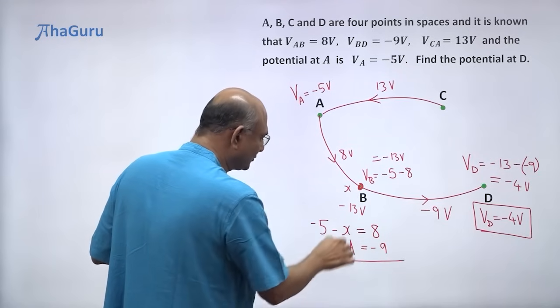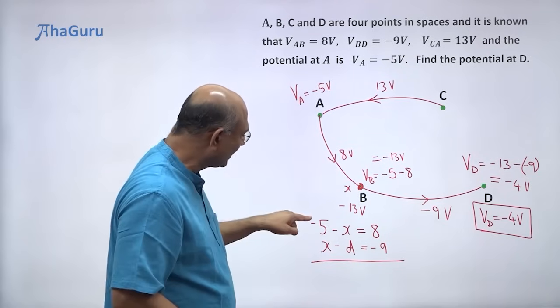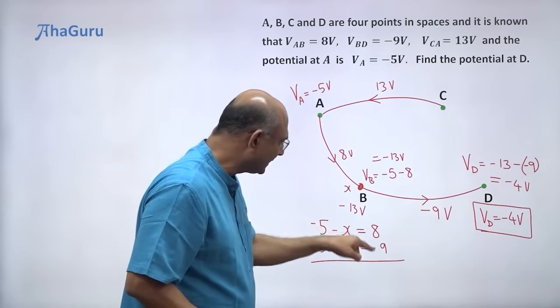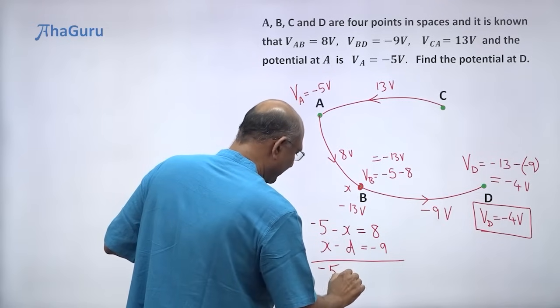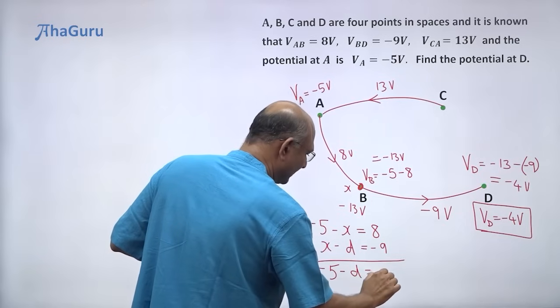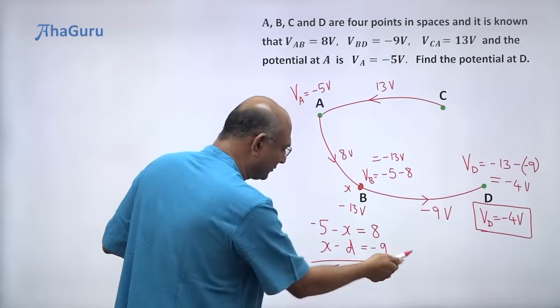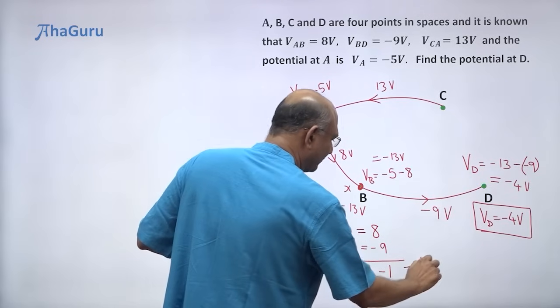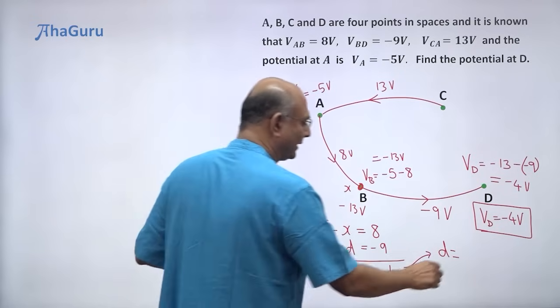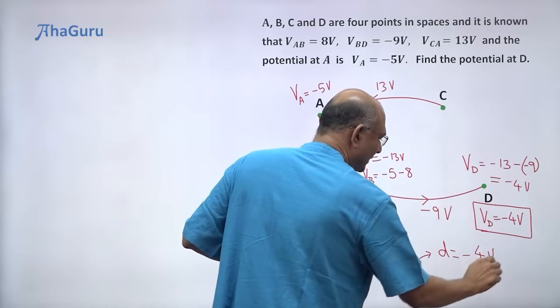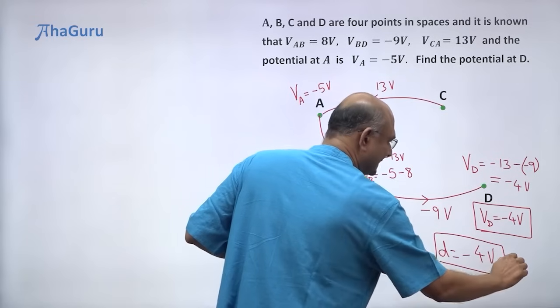Well, if you add these two, you can see that the X cancels out. Minus 5 minus D is equal to minus 1. Minus 5 minus D is minus 1. And so if I take D to that side and solve it, from this I will get D is equal to minus 5 plus 1 minus 4 volts. You get the exact same answer.